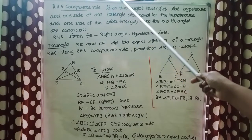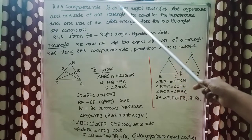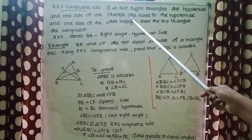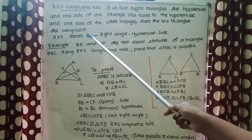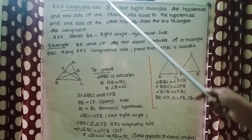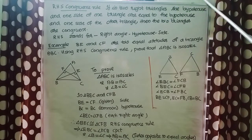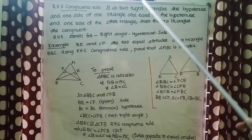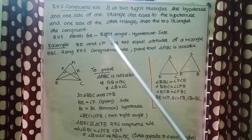RHS congruence rule: If in two right triangles the hypotenuse and one side of one triangle are equal to the hypotenuse and one side of the other triangle, then the two triangles are congruent. RHS stands for Right angle, Hypotenuse, Side. Let us discuss one example.